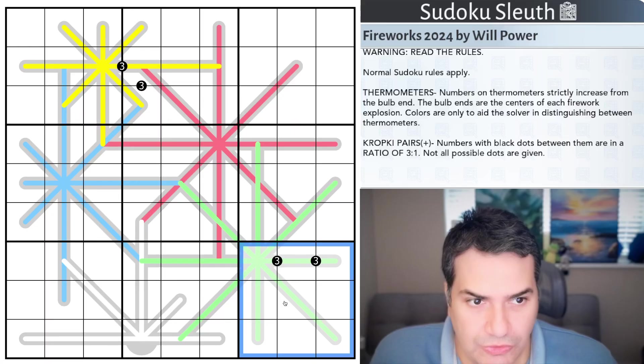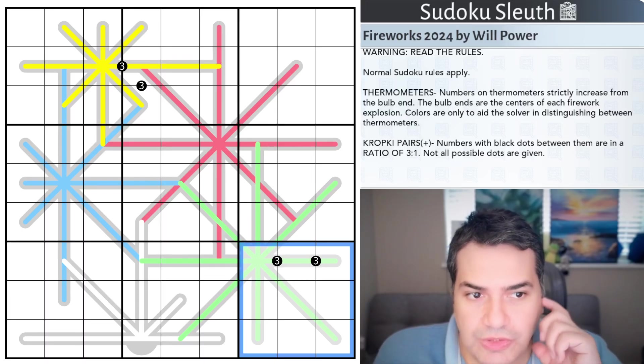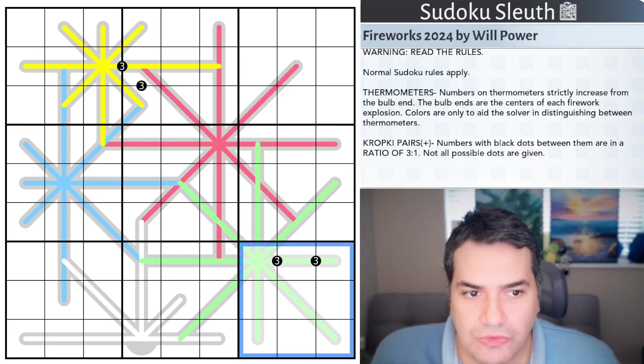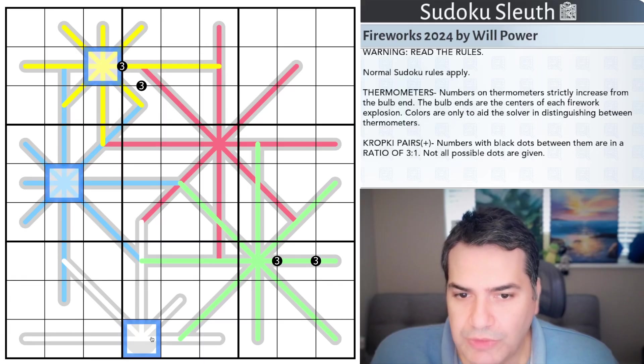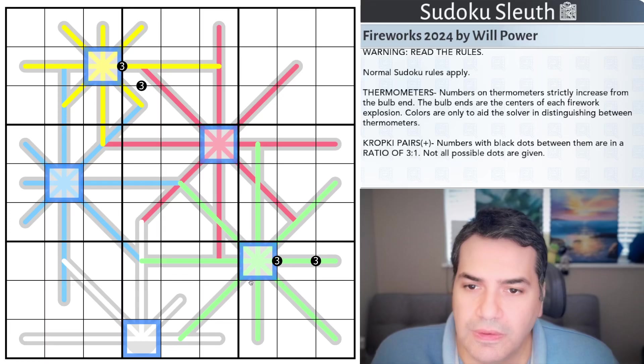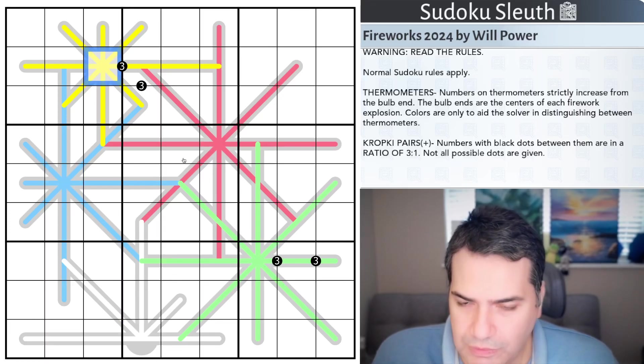Then standard thermometers. So numbers on thermometers strictly increase from the bulb end. And the bulb ends are the center of each firework explosion. The colors are only to aid the solver in distinguishing between the different thermometers. So essentially that will be the bulb. That will be another bulb. That will be another, another, another. And you have to increase from the bulb end.